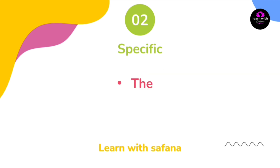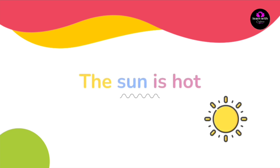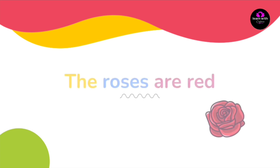مع الـ specific نستعمل the. فنقول: The sun is hot — الشمس حارة. الشمس ما في منها الا واحدة، عشان كذا استعملنا the. The roses are red — الورود حمراء. احنا نعرف الورود اللي يتكلم عنها، اللي هي الـ roses واللي لونها احمر — شيء محدد، عشان كذا استعملنا the.